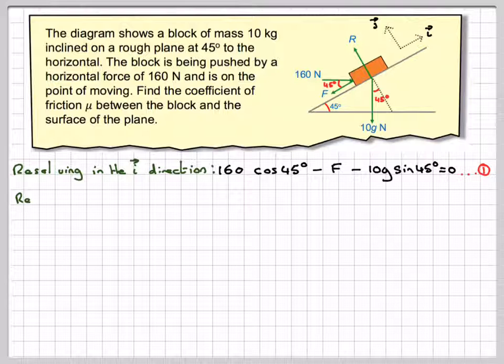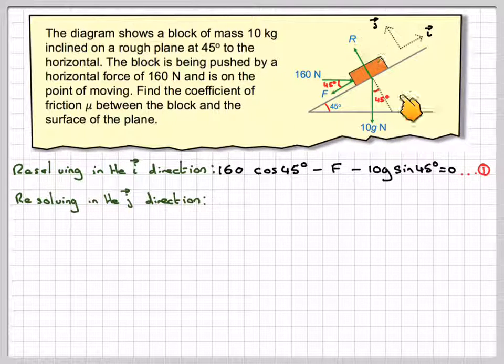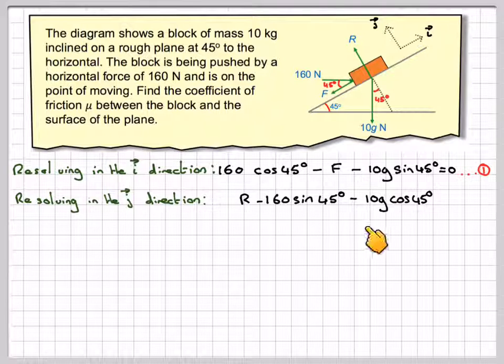And resolving in the other direction, this direction, we're going to have R, obviously, and we're going to have 160 sin 45, but as it's pushing that way, it's going to be acting downwards, that force, minus 10g cos 45 from this one here, is equal to 0.